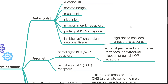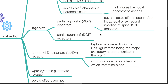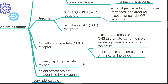Ketamine is also an agonist at a few receptors. It is a partial agonist at KOP receptors, and analgesic effects occur after intrathecal or extradural injection at spinal KOP receptors. It is also a partial agonist at DOP opioid receptors. The NMDA receptor — N-methyl-D-aspartate receptor — is an L-glutamate receptor in the CNS, glutamate being the major excitatory neurotransmitter in the brain. It incorporates a cation channel to which ketamine binds. Ketamine also decreases presynaptic glutamate release, and its opioid effects are not antagonized by naloxone.